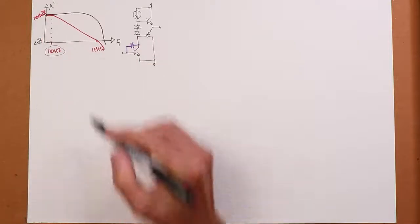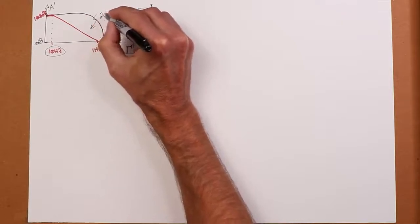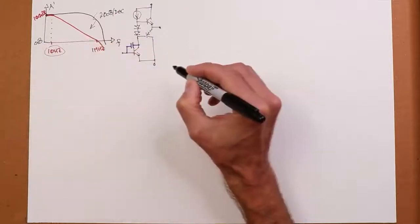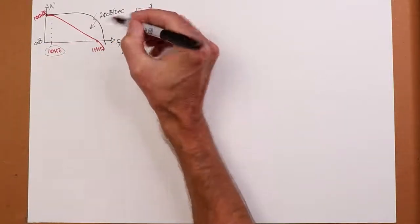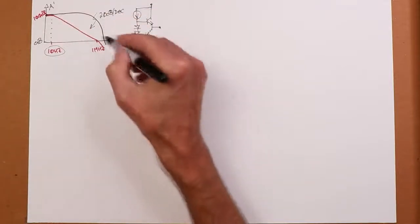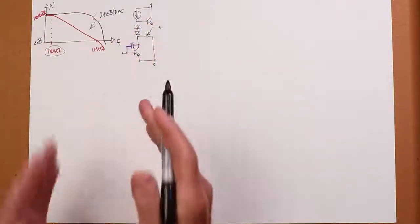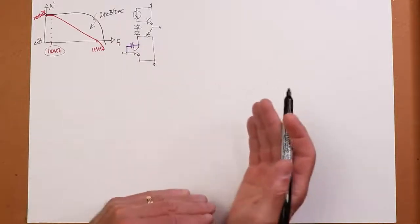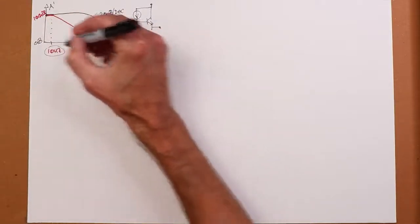Now what ends up happening is, because we're falling at this 20 dB per decade rate, whatever the frequency increases as a factor, if we increase the frequency by a factor of 10, a decade, the gain drops by a factor of 10, 20 dB, or 6 dB per octave. So you go up in frequency by a factor of 2, the gain drops by a factor of 2. So it's this nice even sort of thing. Whatever happens on one side, sort of the inverse happens on the other.